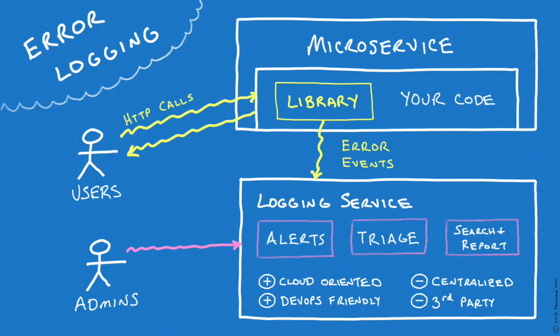Error logging solutions are also popular for cloud-based apps — these are services like Rollbar and Bugsnag. A library is installed into the application that traps any unhandled runtime exceptions. These error events are then sent to the remote logging service, alerting administrators and assisting them in triaging the problem. These solutions often record some helpful details about the user sessions where errors occurred. However, these solutions don't tell us anything about successful usage of the application, just how the app failed. Like server logging solutions, error logging solutions are typically cloud and DevOps friendly, but they also tend to centralize all customer data into a single repository.